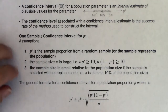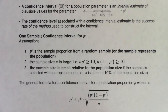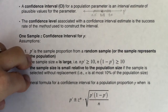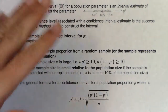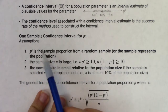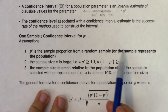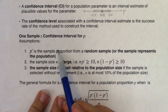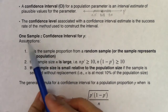Anytime you construct a confidence interval, you have to check your assumptions first. We need to make sure our sampling distribution is normally distributed or approximately normal. For proportion land, there are three assumptions to check. First, the statistic must come from a random sample, or the sample must represent the population.